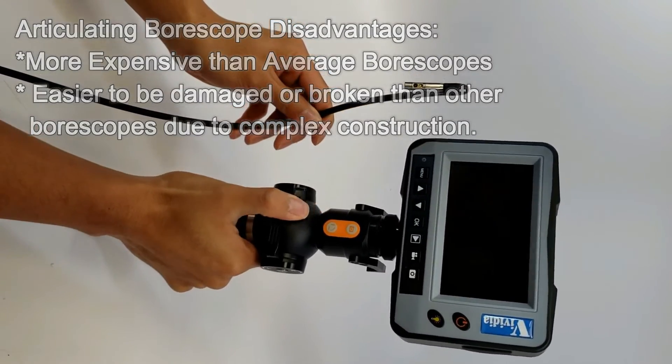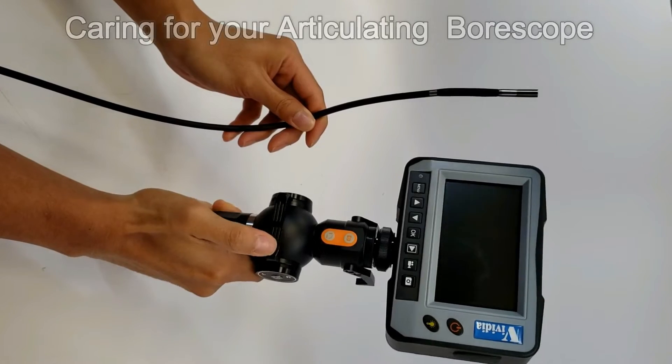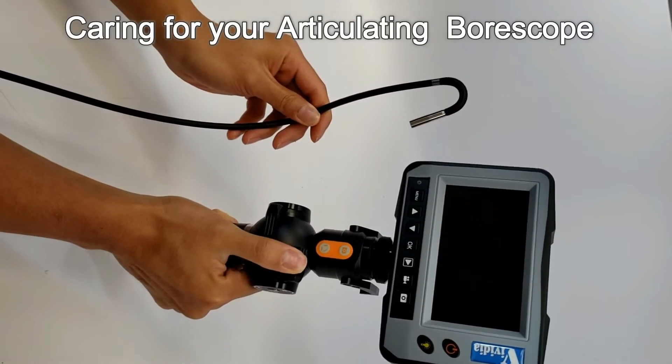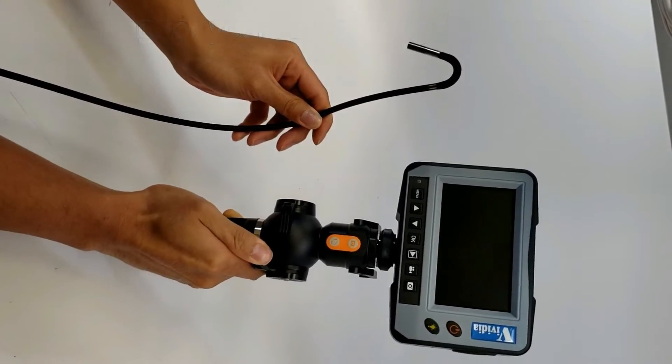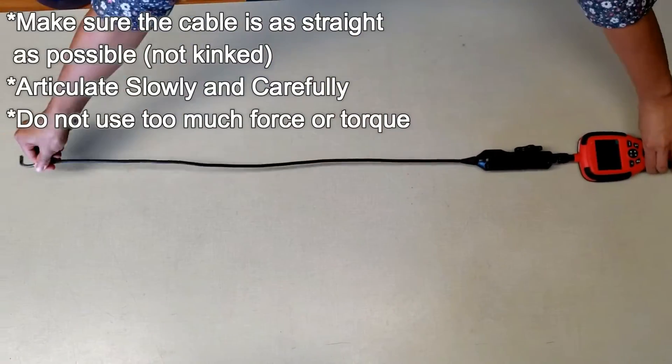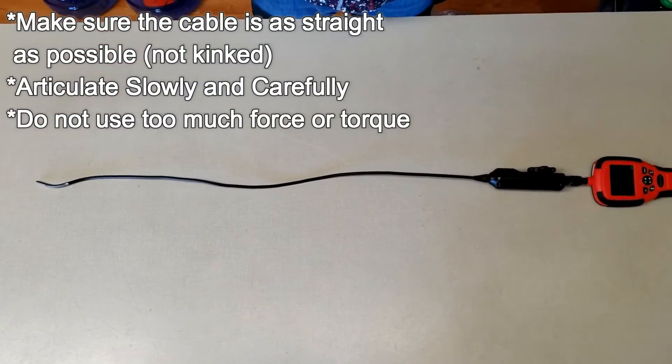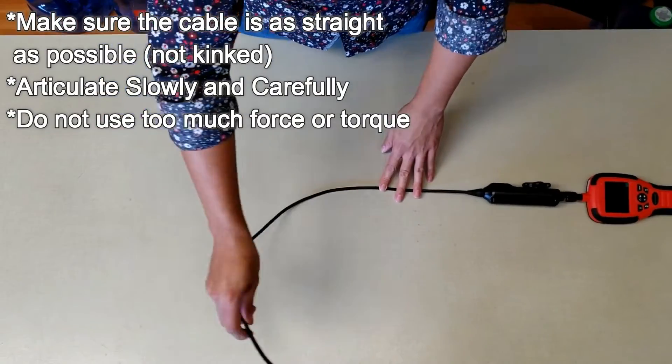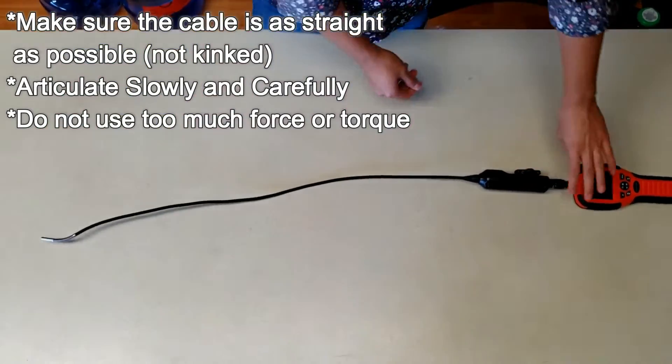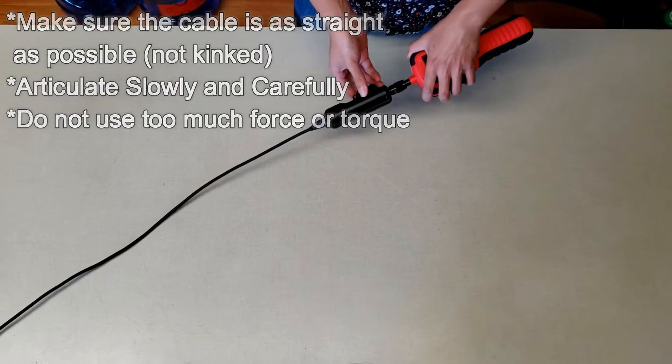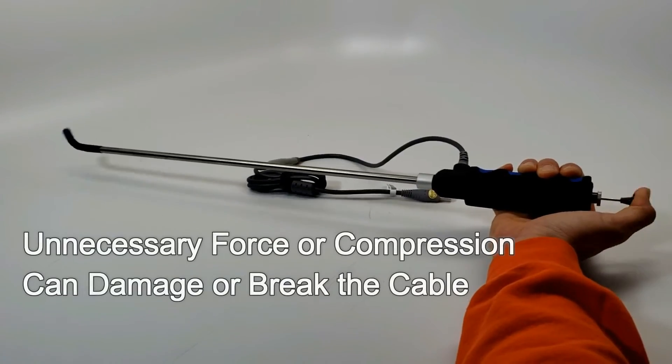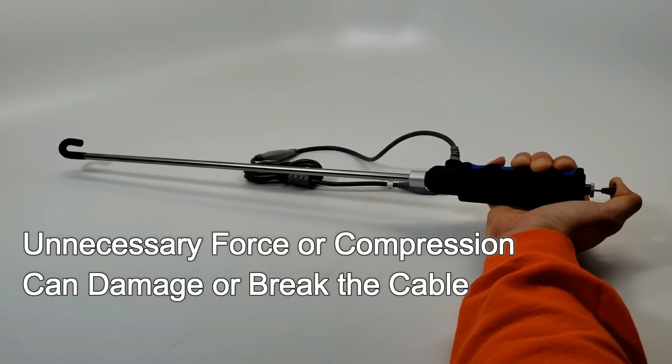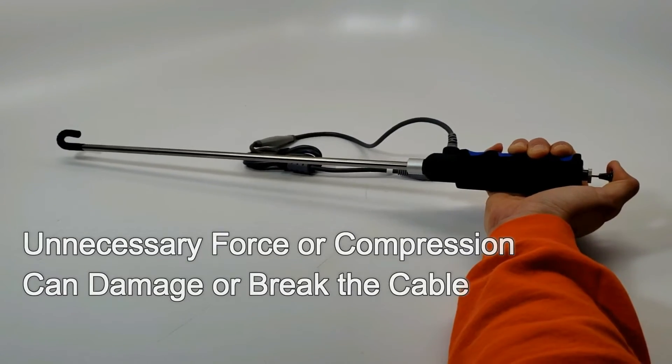Boroscopes are built to be sturdy tools, but they also have delicate electronic components and must be cared for just like any other device such as your smartphone. Take care to make sure that the probe is straight as possible, avoids hard impact, and is articulated slowly and carefully without using too much force when bending the cable back. Unnecessary compression can stress the cable causing it to break immediately or gradually over time.